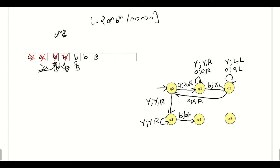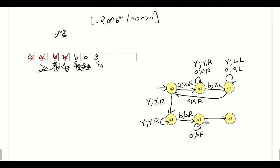We will keep b as it is and the tape head will move towards the right side, changing state to q4. From state q4, there can be many more b's — here we have two b's greater than the number of a's. We will keep each b as it is and move towards the right side. At last, we will see the blank symbol, and we can say that the number of b's in the string is greater than the number of a's. The blank symbol is kept as it is and the machine will stop. So q5 will be the final state.